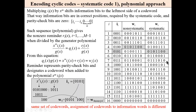For encoding a systematic code, multiplying the information polynomial by x to the power of m shifts the information bits to the leftmost side of the code word. That way, information bits are in the correct positions at the left side as required by the systematic code, and the parity check bits are initially zero. For this information polynomial in binary form, we have these four bits at the left and three zeros at the right. Such a sequence gives a non-zero remainder when divided by the generator polynomial. From this equation, the remainder represents the parity check bits.